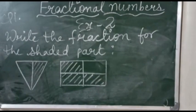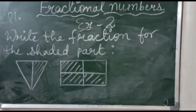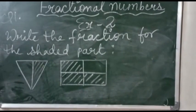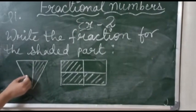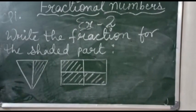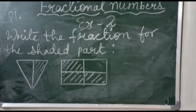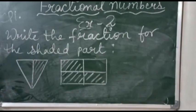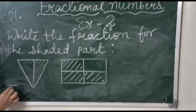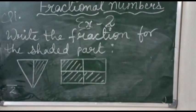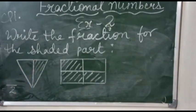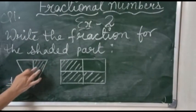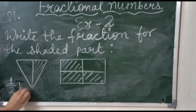Here we have two figures. The first figure is a triangle and the second one is a rectangle. In the first figure you can see there are two equal parts of the triangle, and one part is shaded. We always write the total number of parts in the denominator, so denominator is 2, and the shaded part in the numerator is 1. So here one by two is called half.